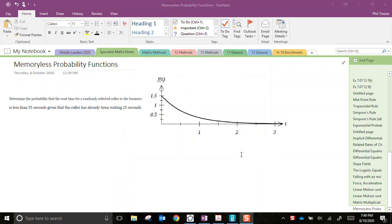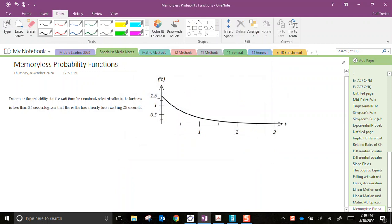We've got here a graph of an exponential probability distribution, and we can see that the intercept here on the y-axis is 1.5. That gives us the value of lambda, 1.5, and the form of this function, f of t, is lambda by e to the negative lambda times t.